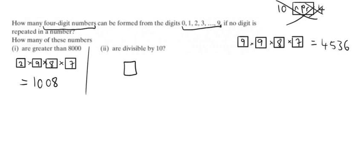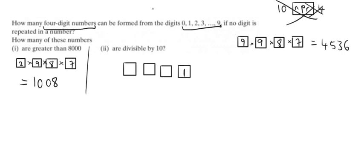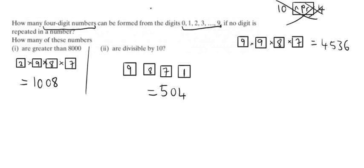How many four-digit numbers from those digits are divisible by 10? For divisibility by 10, the number must end in zero — so there's only 1 option for the last digit. For the remaining three positions there are 9 choices, then 8, then 7. Multiplying 9 × 8 × 7 × 1 gives 504. So it's a combination of using the nPr button or using the box method to figure out how many permutations each situation produces.